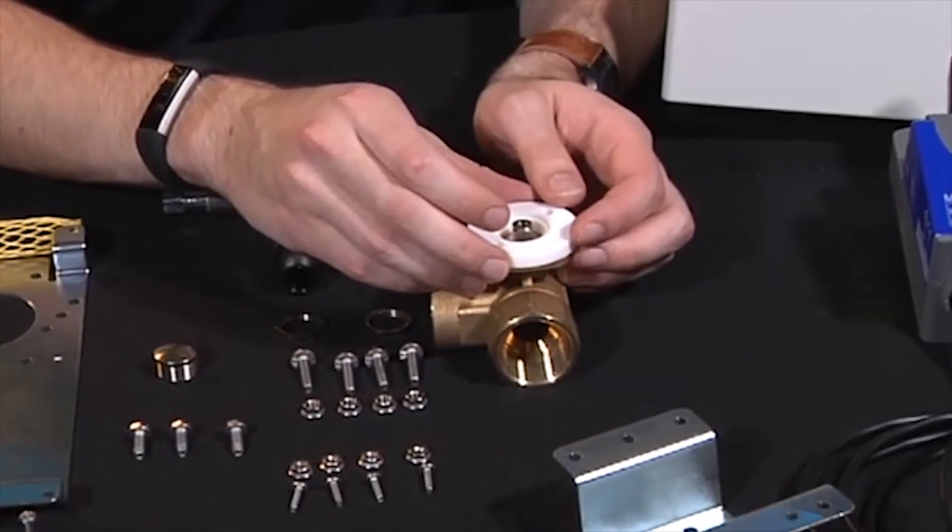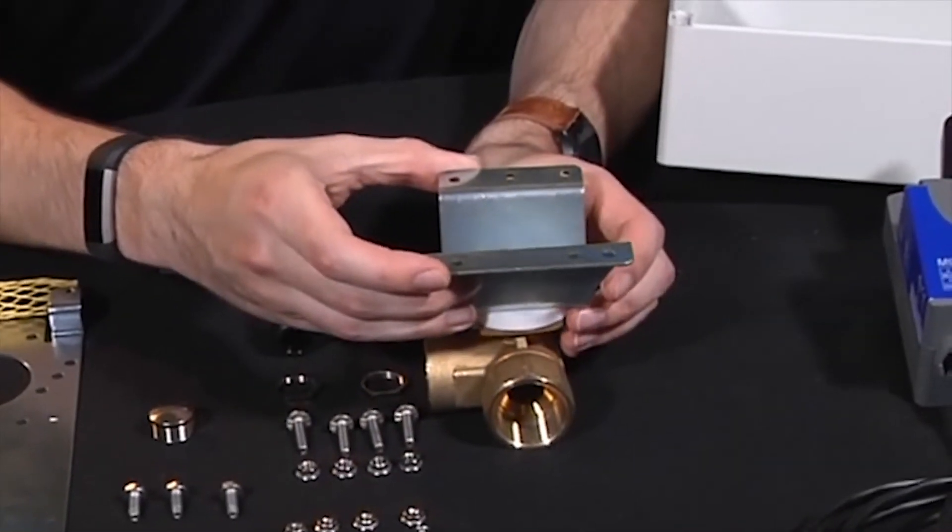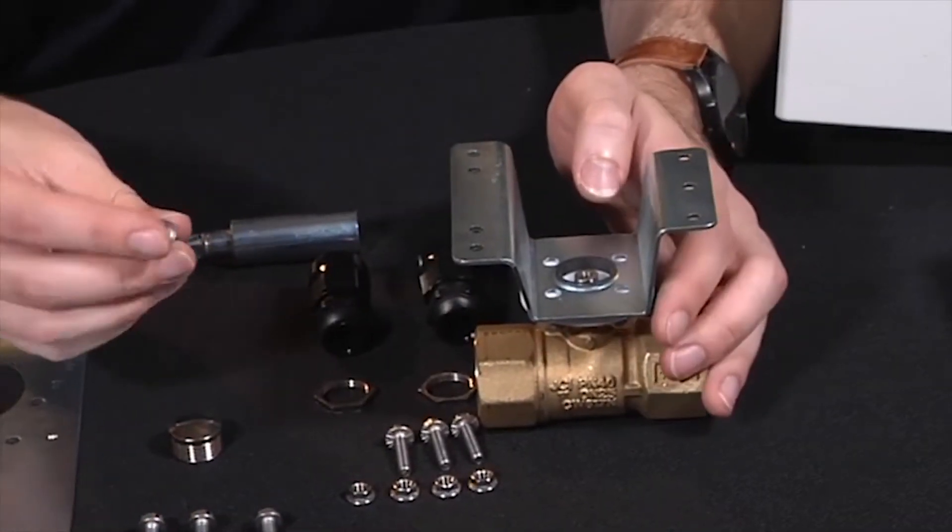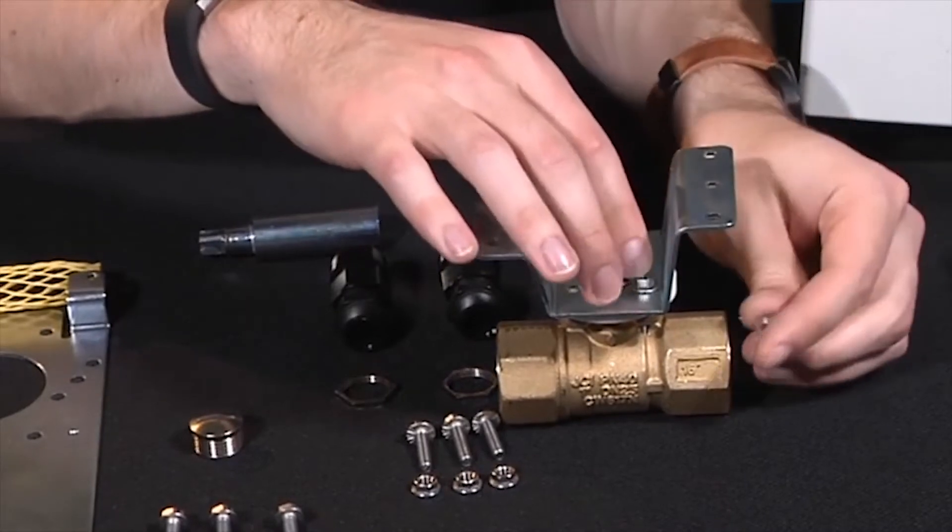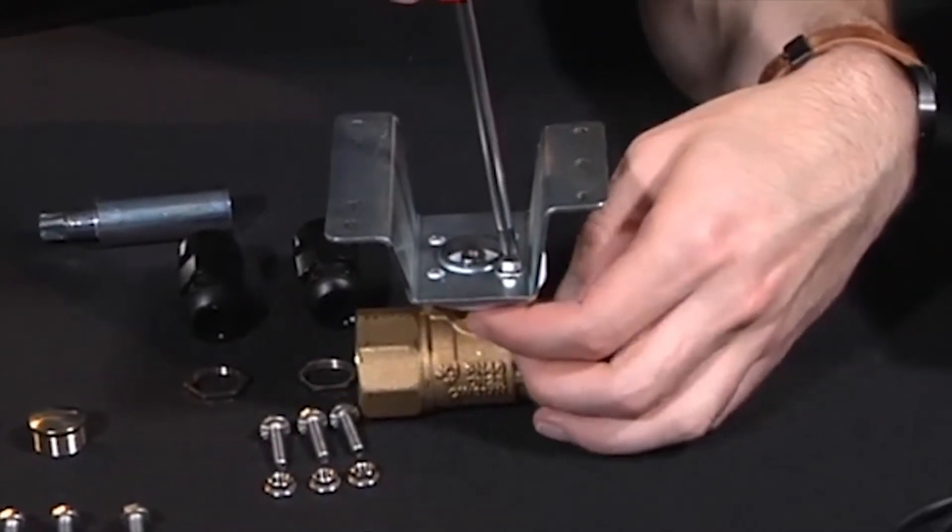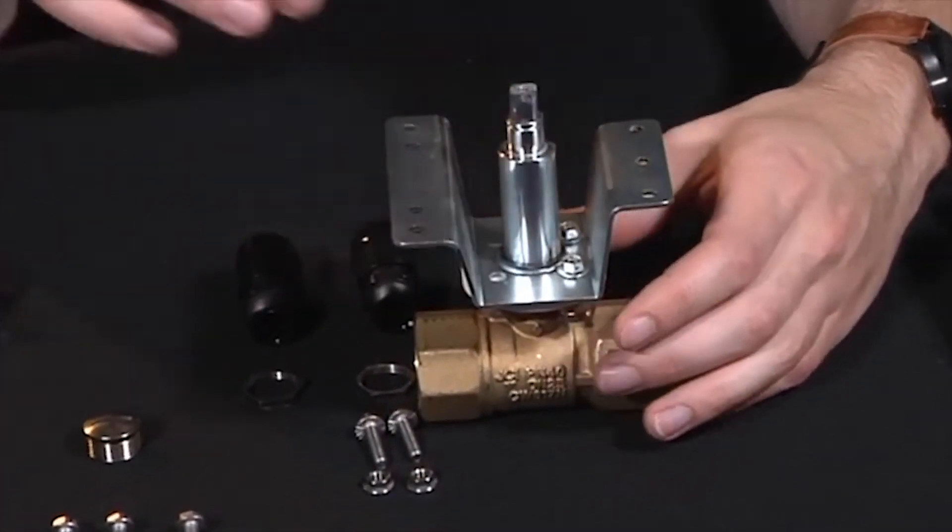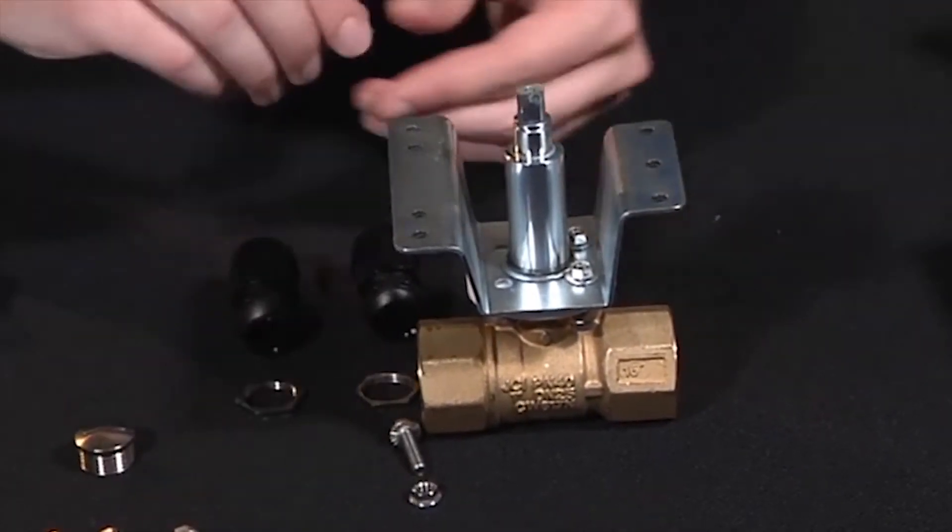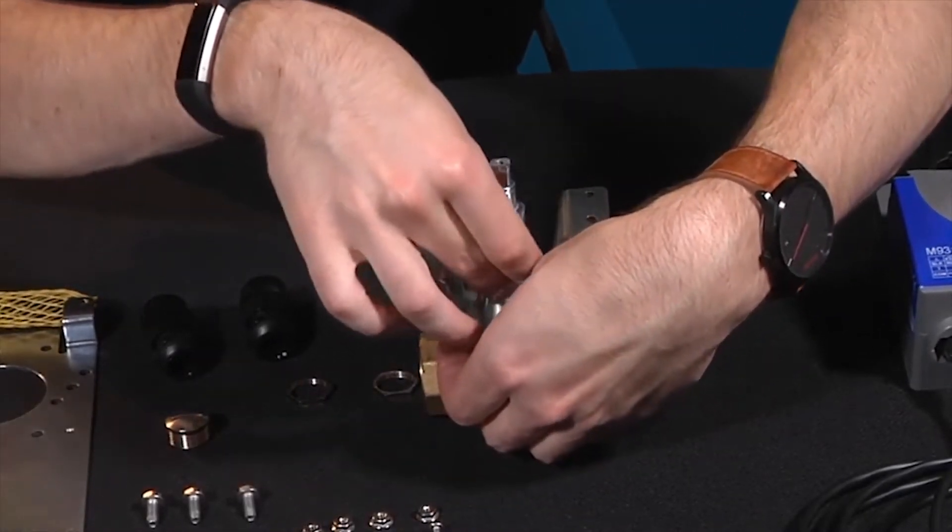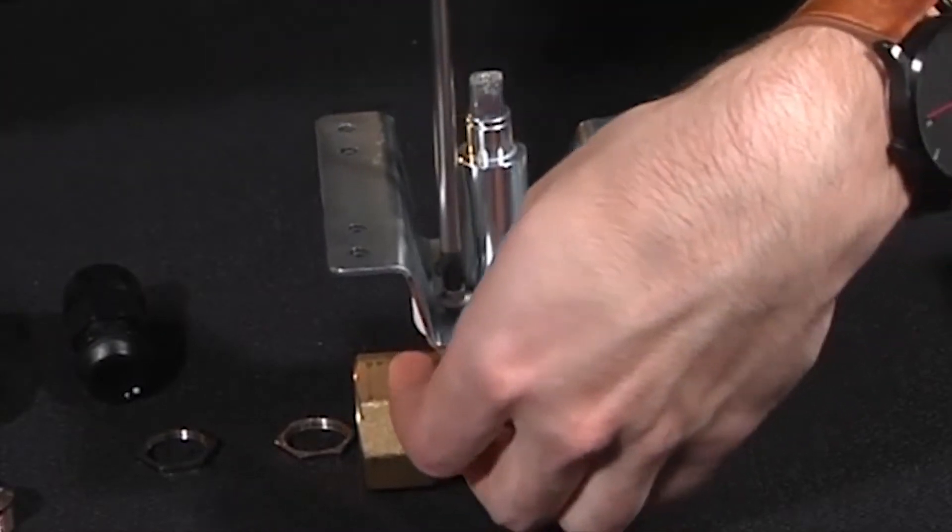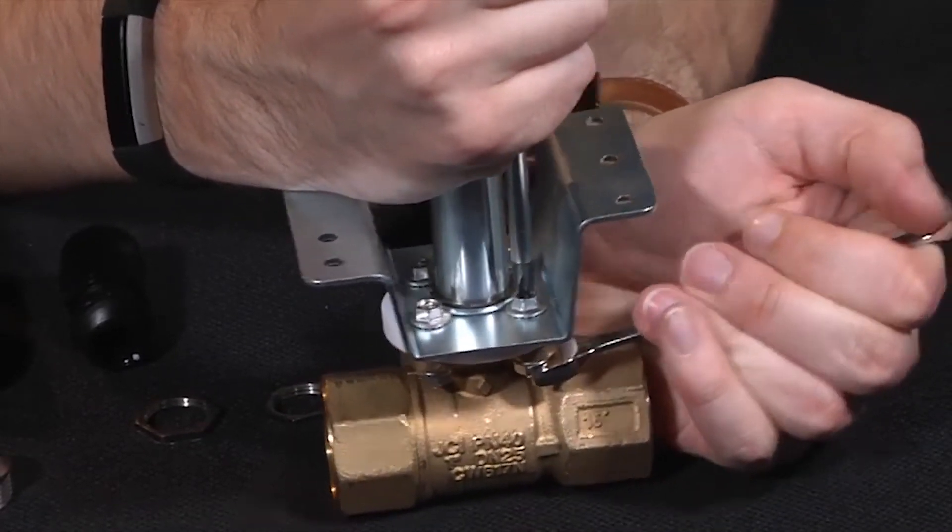First, we'll be taking the valve and installing the thermal spacer over it. Next, we'll install the mounting bracket on top of it with these four screws and nuts. Temporarily install the shaft, which will help keep the bracket aligned. Tighten the screws and nuts to a recommended torque of 35 to 44 inch pounds.